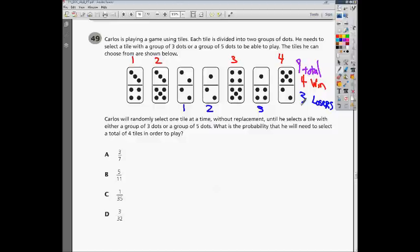The question asks, what is the probability that he will need to select a total of four tiles in order to play? If you just use a little logical thinking here, you can eliminate a couple answers very quickly. In order for this to work, he has to pull all three of the losers randomly before he pulls one that wins, and there's more that win than lose. So it is very unlikely that this is going to happen. A and B choices seem really unlikely, so you could say that A and B are probably not the right answers.